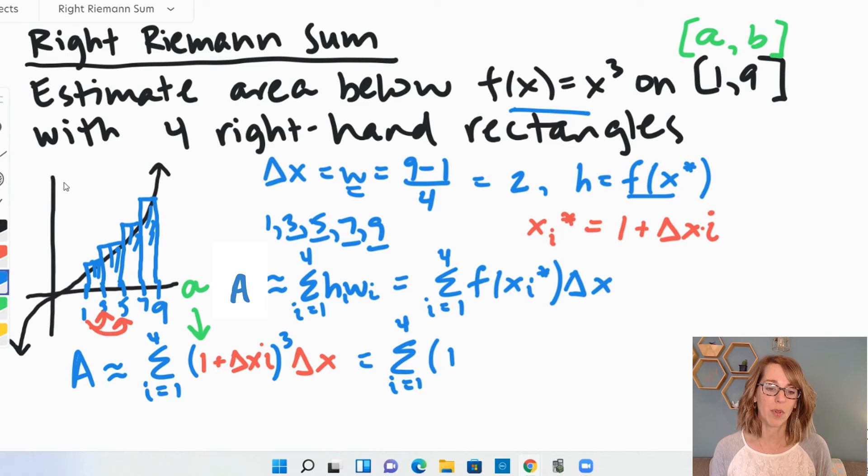1 plus delta x, that's going to be 1 plus 2i cubed, because this is the cubed function. And then my delta x, that interval is 2, so times 2. Now I'm ready to put this right into my calculator.